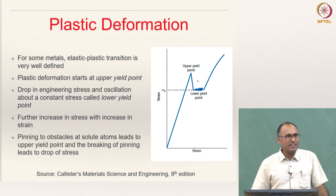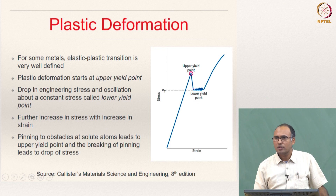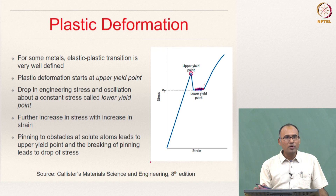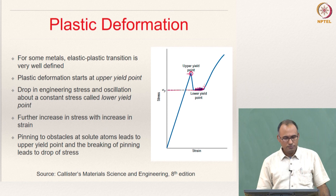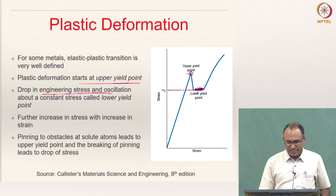This is something you have probably seen while testing mild steel. Typically this is what you will observe as the yield behavior for mild steel: you will have something called an upper yield point, and then a sudden drop in stress, followed by the lower yield point, about which at almost constant stress you will have these oscillations, and then further hardening happens. This is not observable in all materials — it is typical behavior for mild steel. The upper yield point is where actual yielding starts, but when reporting yield strength you report it as the lower yield point. Plastic deformation actually starts at the upper yield point, there is an immediate drop in engineering stress, and then it oscillates about a constant stress called the lower yield point, and that is what you report as the yield strength.